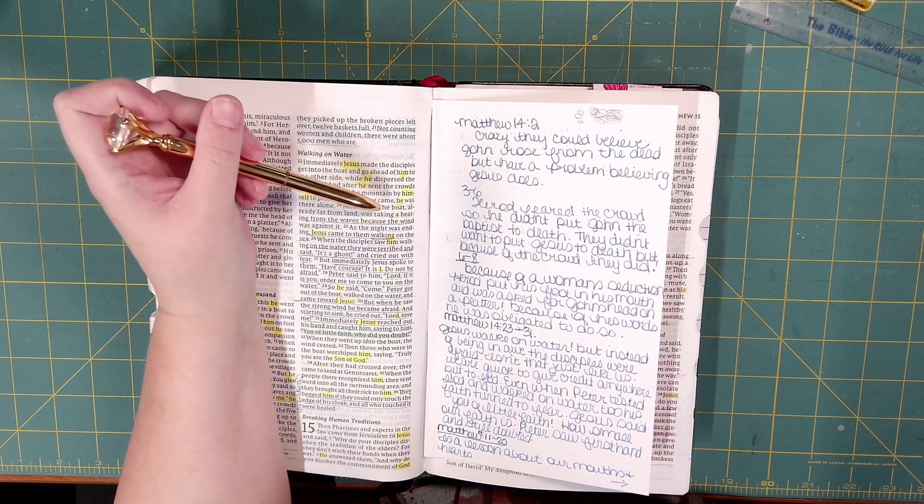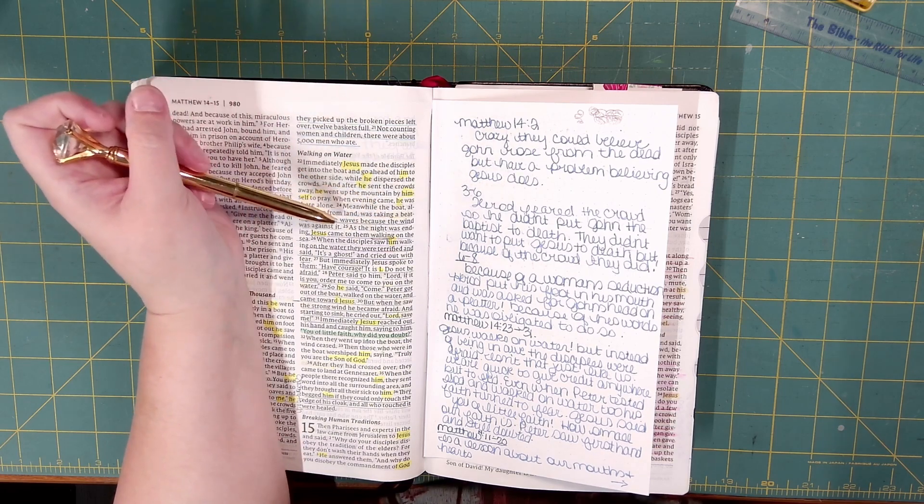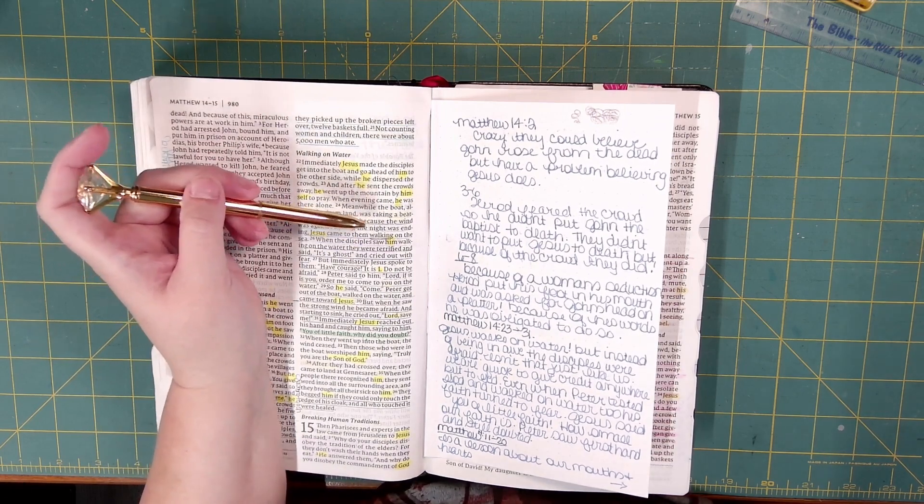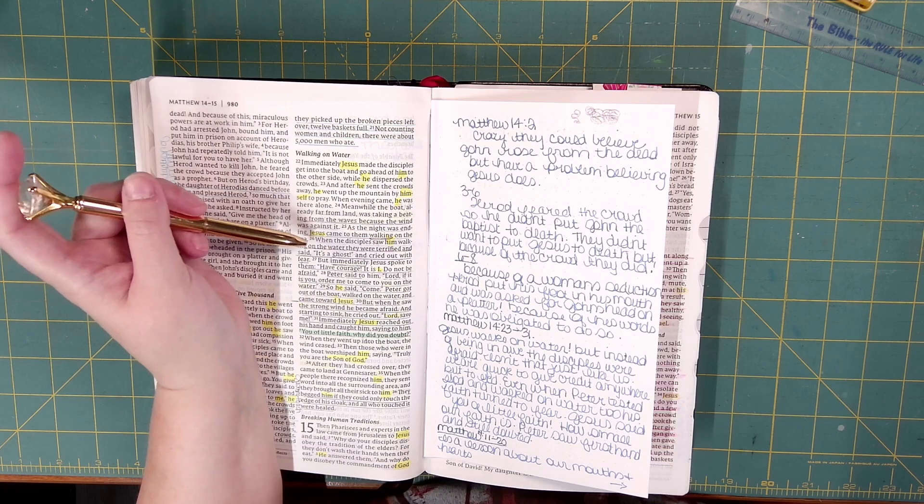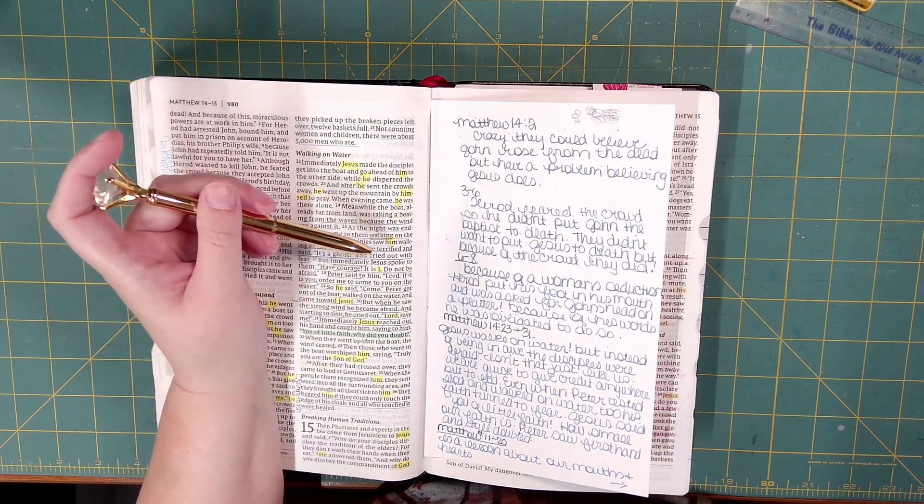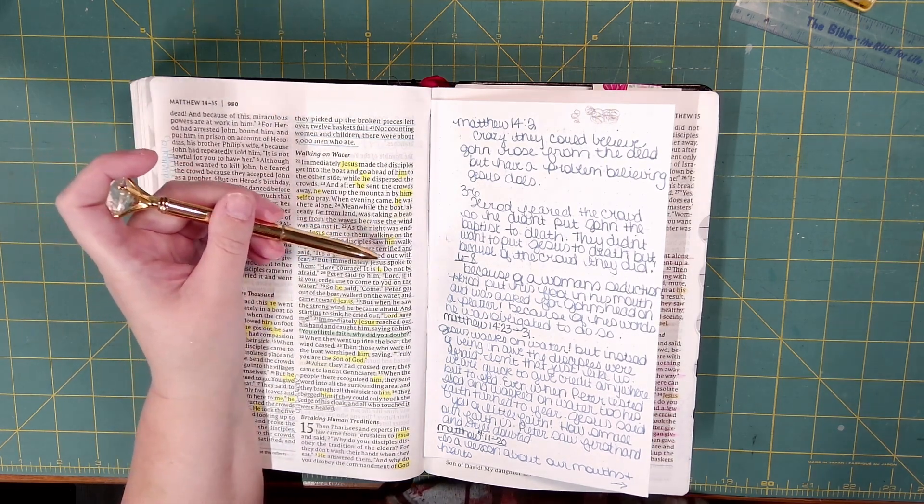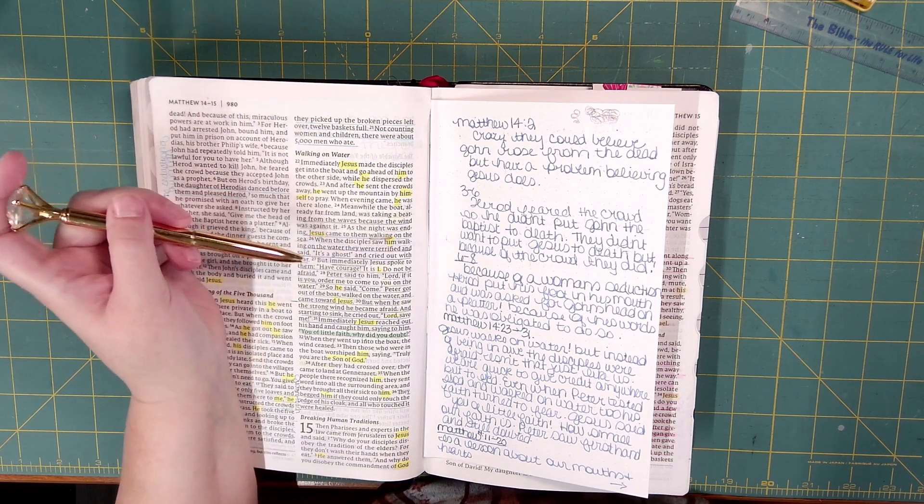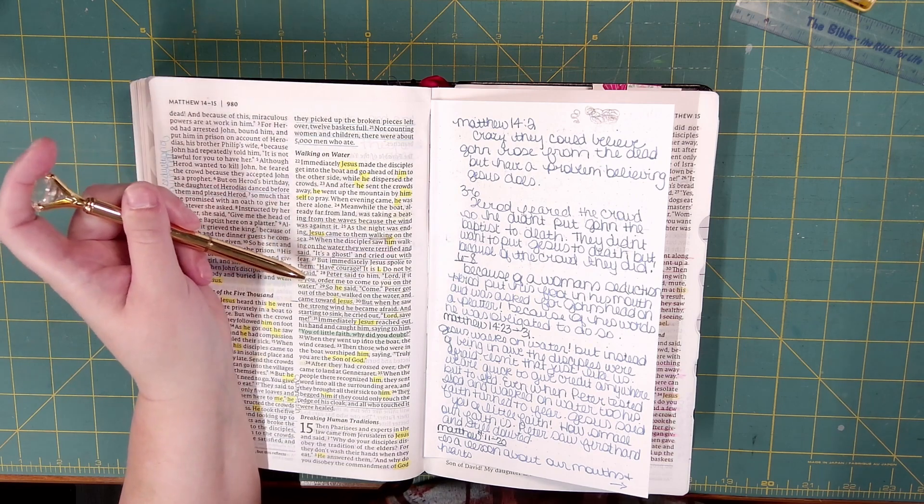Meanwhile, the boat, already far from land, was taking a beating from the waves because the wind was against it. As the night was ending, Jesus came to them walking on the sea. When the disciples saw him walking on the water, they were terrified and said, It's a ghost, and cried out with fear. But immediately, Jesus spoke to them, Have courage, it is I. Do not be afraid.